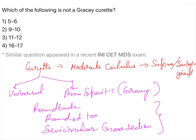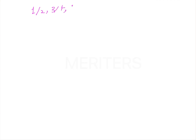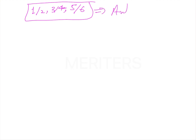Now we are more interested in the Gracey curettes, specifically which numbers correspond to which areas, as this has been asked many times in exams. Gracey curettes 1, 2, 3, 4, 5, and 6 are all used to scale all tooth surfaces in anterior sextants.